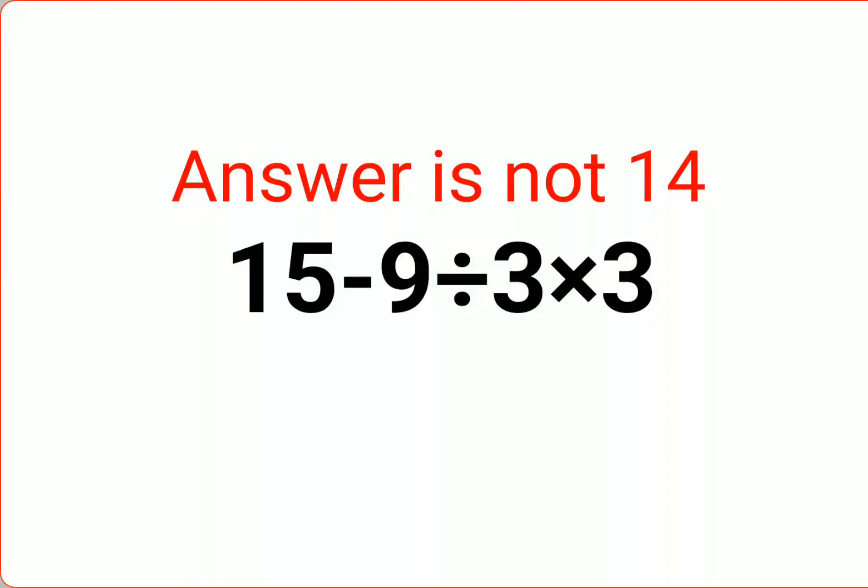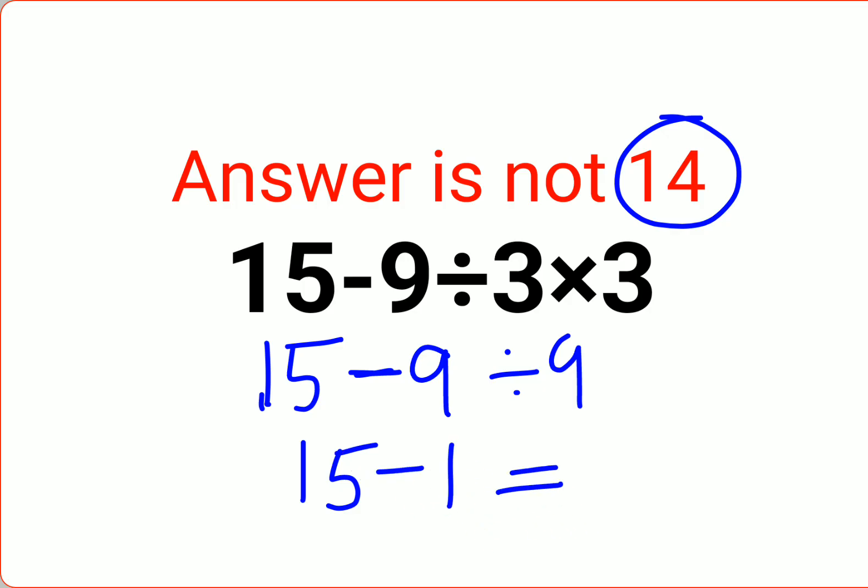Welcome everyone. So today we are going to understand why the answer for this question is not supposed to be 14. Please understand here what people think is that we keep 15 as it is and minus 9 divided by 3 but multiplied by 3 is again 9, so we have 15 minus 1. The answer is 14 because 9 divided by 9 is 1. No, that is not how these things work.